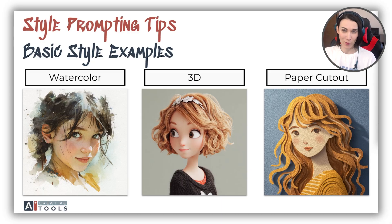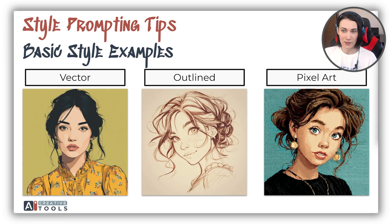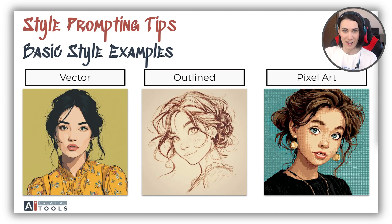Here are some examples of popular terms which can be used as style guidance for AI: watercolor, 3D, paper cutout, vector, outlines, pixel art, and so on. I've used the same prompt as in the beginning, just changing the style. Now let's get into more detail.